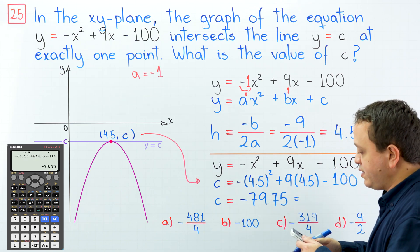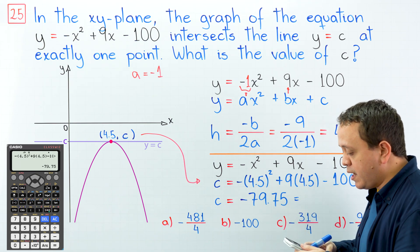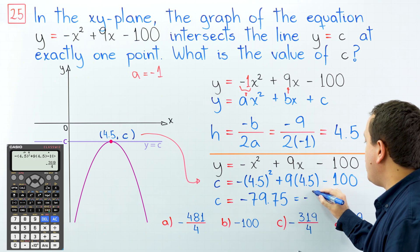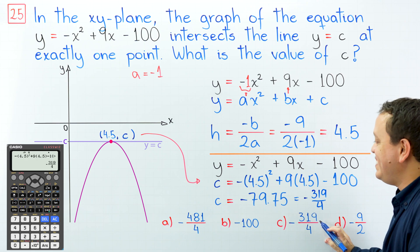Most calculators have a button to convert decimals to fraction. I'm going to press that button in my calculator. And we have negative 319 over 4. That's it. The choice c is the correct answer.